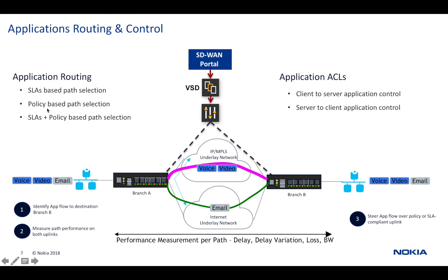The second approach is a policy-driven path selection, where the user can set it up so that email should always follow a specific path, with no SLA threshold. It is also possible to do a mix and match of both approaches. So those are three possibilities, and we will see how these can be configured in the portal for enterprise users.